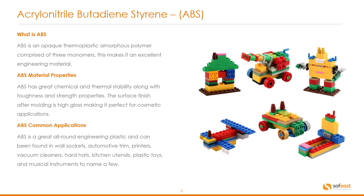Now let's have a look at some of the applications. ABS is a great all-round engineering plastic and can be found in wall sockets, automotive trim, printers, vacuum cleaners, hard hats, kitchen utensils, plastic toys and musical instruments, to name a few. The surface finish after molding is high gloss, making it perfect for cosmetic applications. You can see the images on the right — they are typical plastic toys for kids.